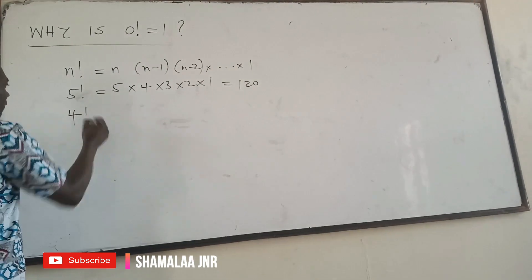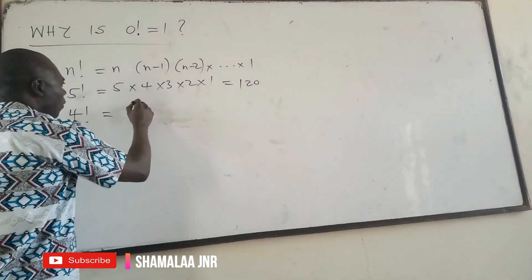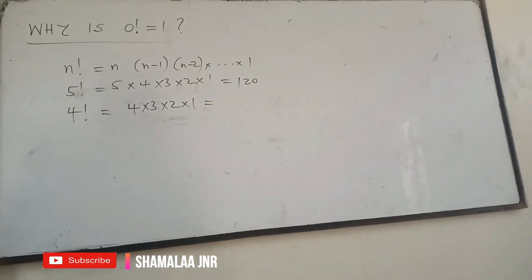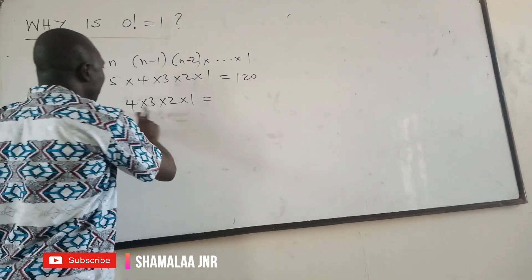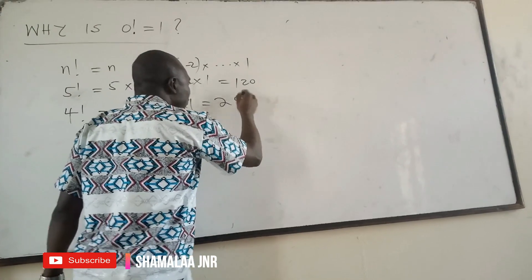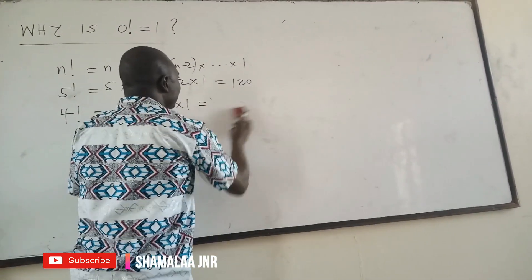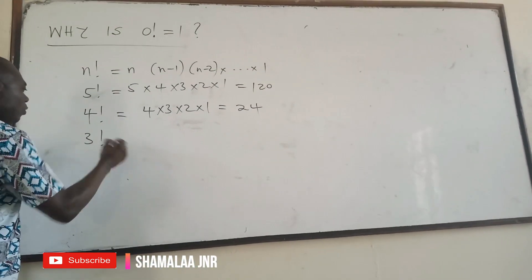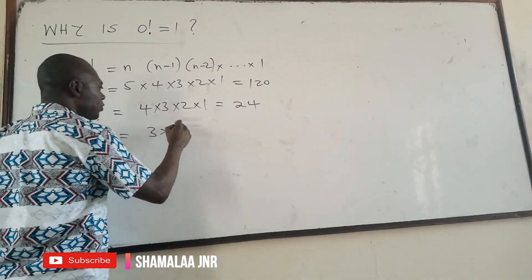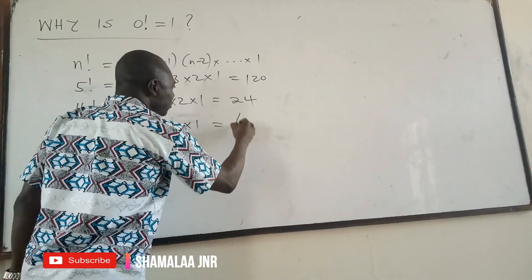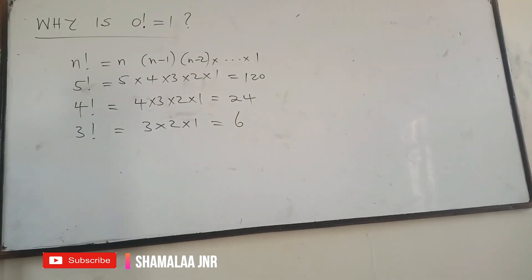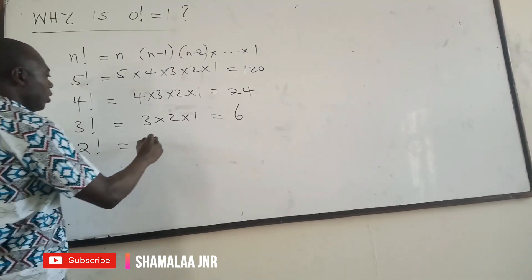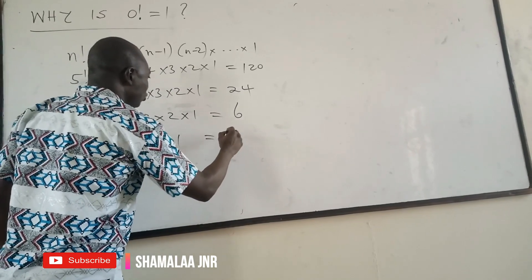Now, 4 factorial means 4 times 3 times 2 times 1. 4 times 3 is 12, times 2 is 24. So 4 factorial is equal to 24. Now, 3 factorial is equal to 3 times 2 times 1, and this is equal to 6. I want to give you the simplest proof you can ever get. 2 factorial is equal to 2 times 1, and this is equal to 2.